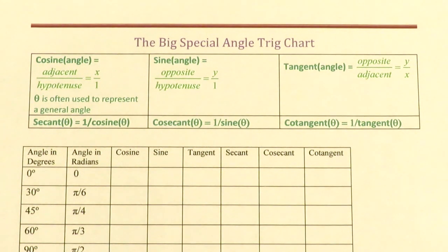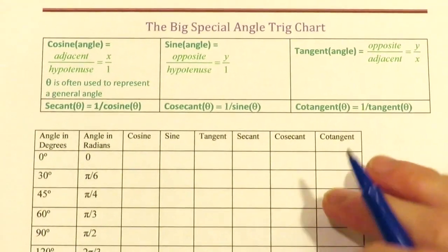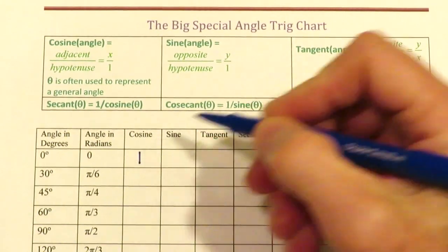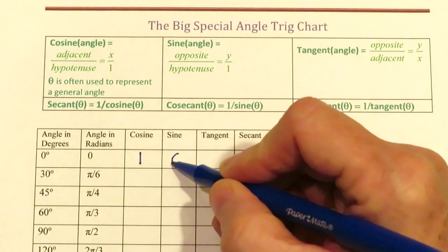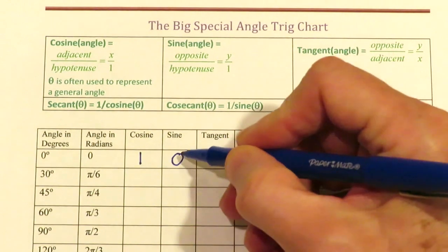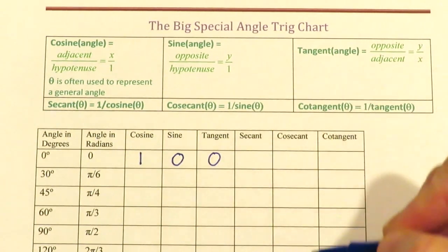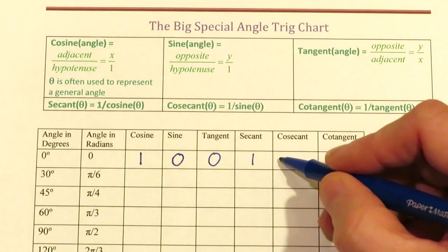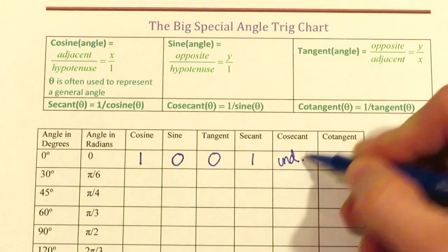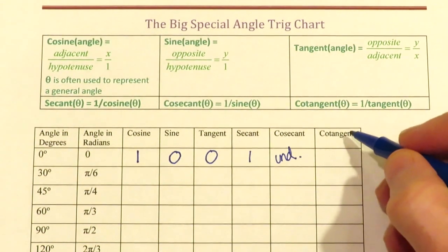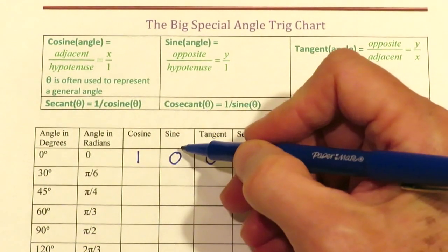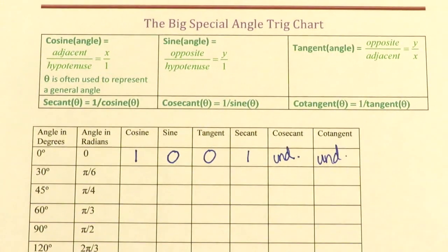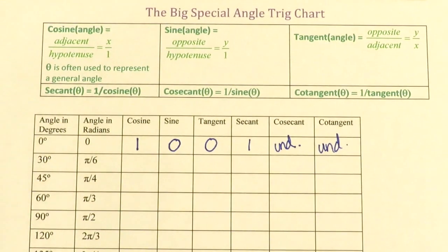The other three functions are the reciprocals of those. At zero degrees, cosine is one because the x-coordinate is one; sine is zero because the y-coordinate is zero; tangent is zero divided by one, so you get zero. Secant is the reciprocal of one. Cosecant would be one divided by zero, which is undefined. Cotangent has cosine in the numerator and sine in the denominator, and is also undefined because you're dividing by zero.